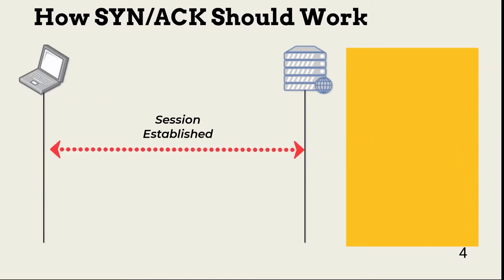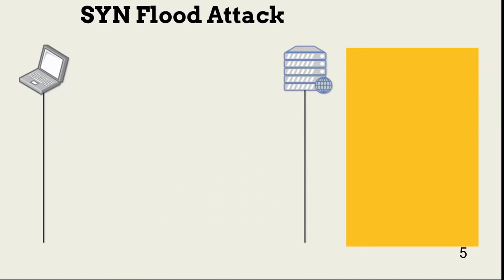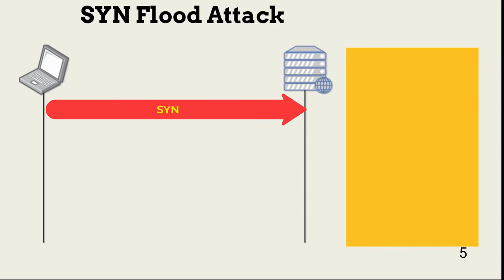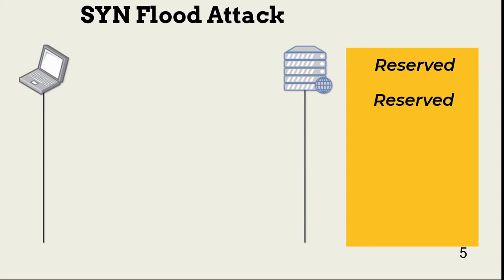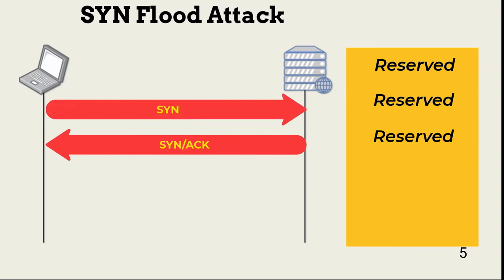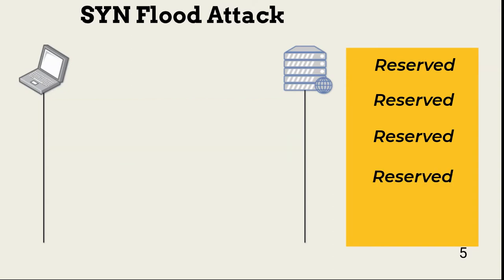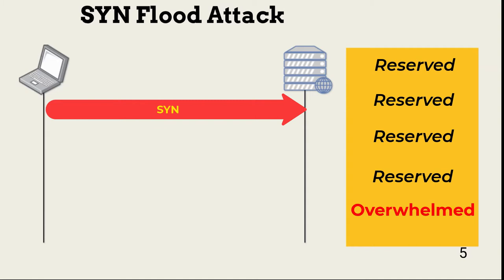Denial of service happens when the number of open requests exceeds the server's ability to manage them. In a SYN flood, a threat actor takes advantage of the request limitation as follows. The threat actor sends a SYN packet to the server. The server opens a connection request and sends a SYN-ACK packet. However, the threat actor does not return an ACK packet. Instead, he continuously sends SYN packets without a final ACK. This quickly stresses resources to the point that the server can no longer support connections.